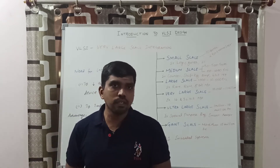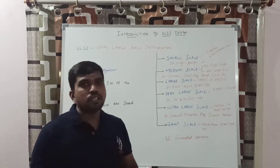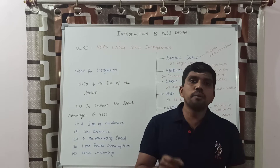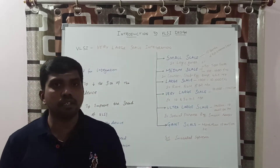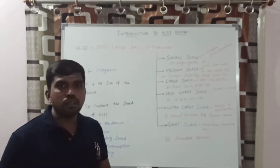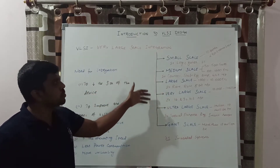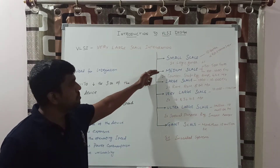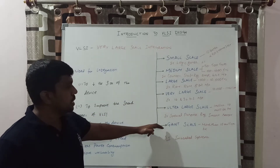An important topic is the scale of integration. The scale of integration is classified based on the number of transistors and logic gates used in a single IC package. Based on the number of transistors and logic gates, we can classify six types of scale of integration: Small Scale Integration (SSI), Medium Scale Integration (MSI), Large Scale Integration (LSI), Very Large Scale Integration (VLSI), Ultra Large Scale Integration (ULSI), and Giga Scale Integration (GSI).